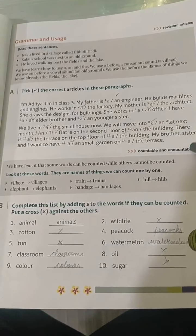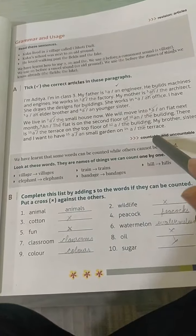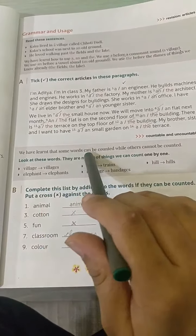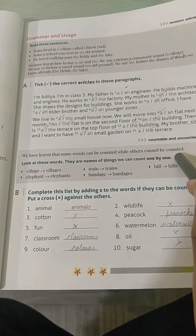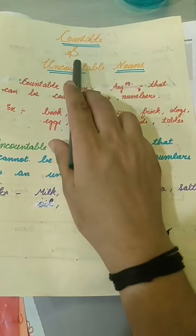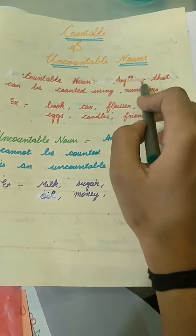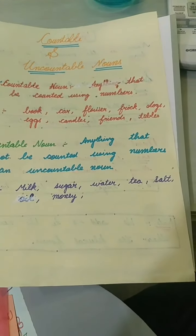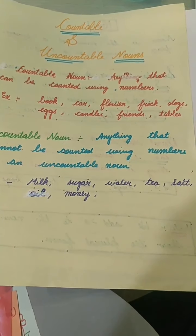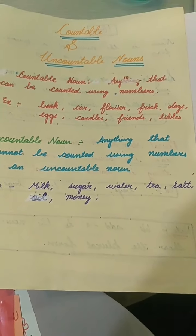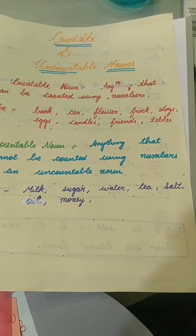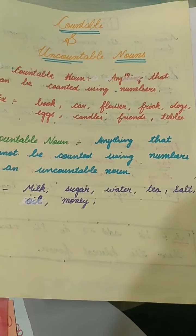With this we have completed A and THE. Now I will teach you what are countable and uncountable nouns. Some words can be counted while other words cannot be counted. Anything that can be counted using numbers is called a countable noun. Words that you cannot count using numbers are called uncountable nouns.